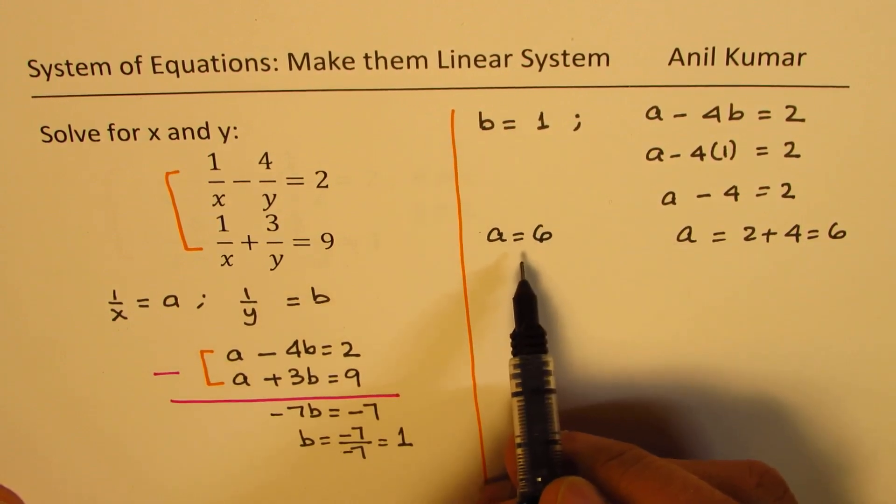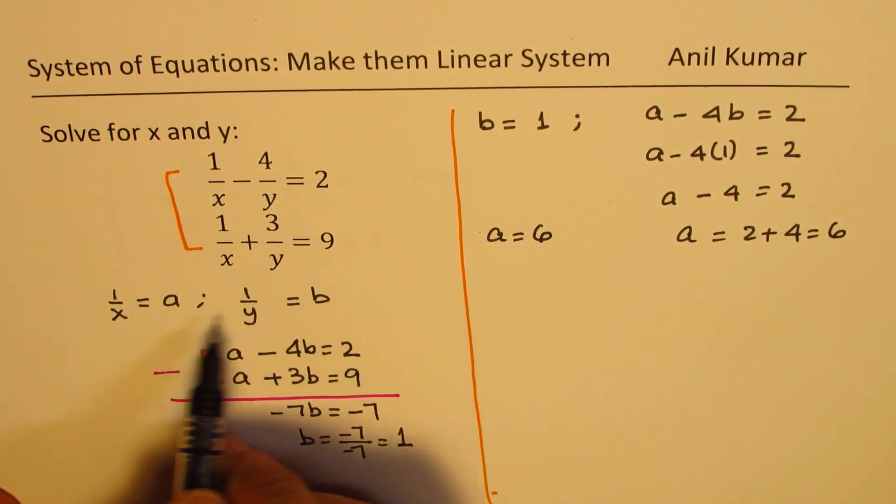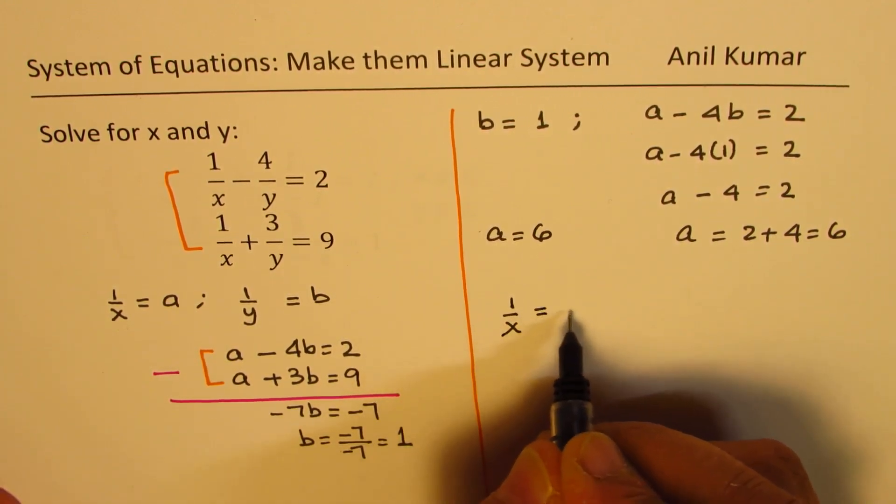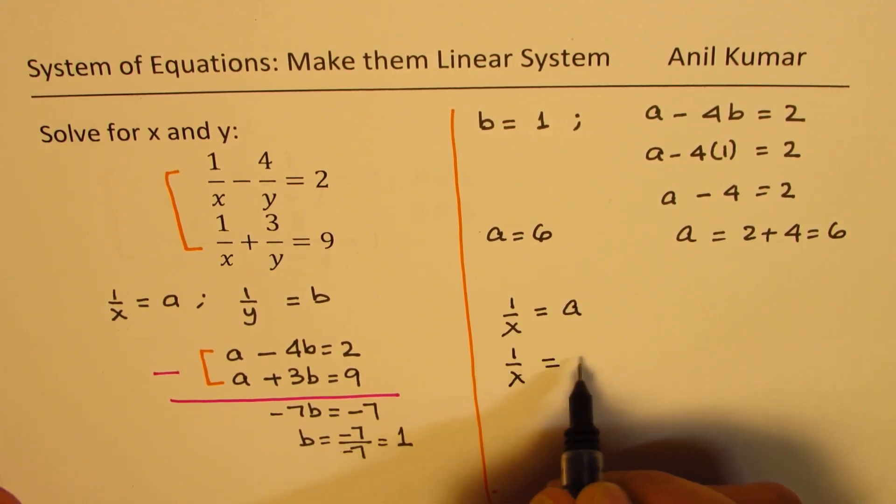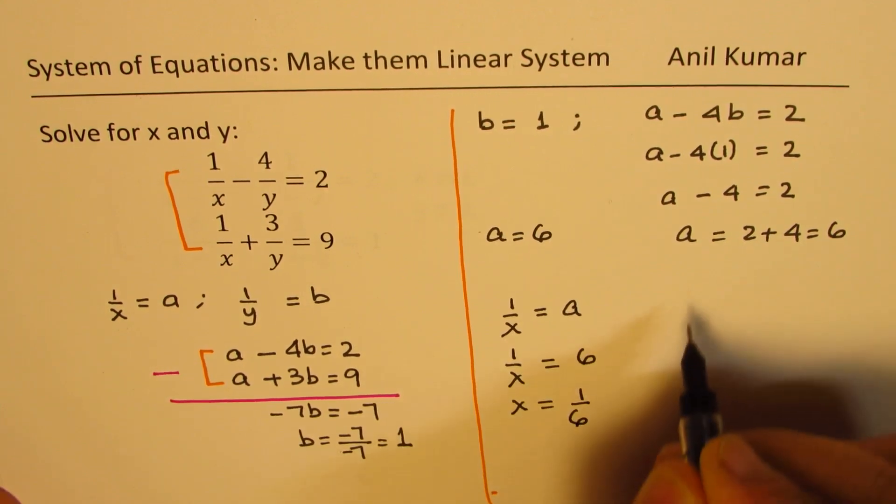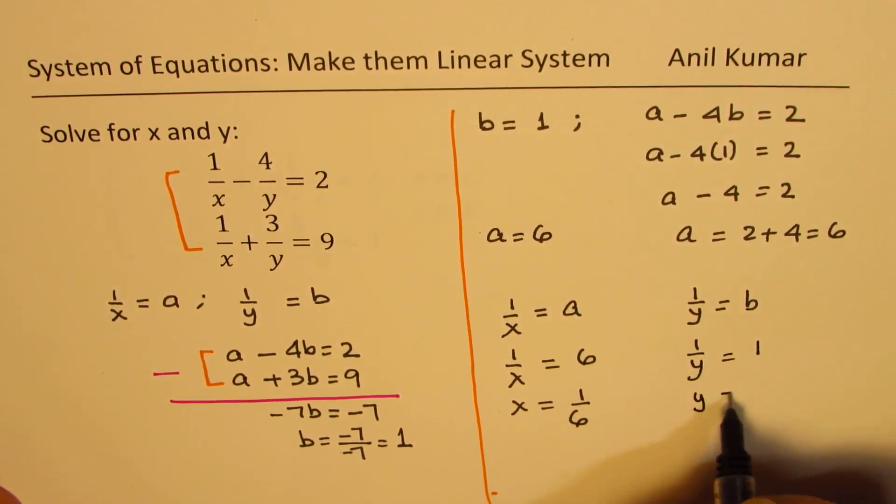Once we have a and b, we can find x and y. So substituting it back, we know 1 over x is equal to a. So that means 1 over x is equal to 6, or x is equal to 1 over 6. 1 over y is equal to b, so we get 1 over y equals 1, or y equals 1.